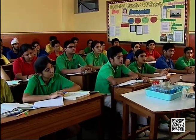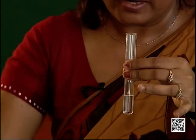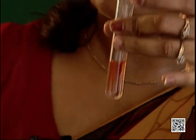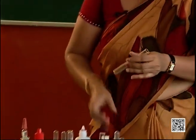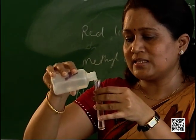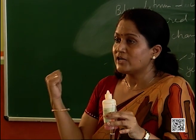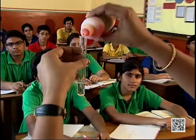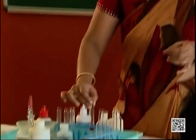We have two unknown samples and with the help of indicators we'll determine whether each is an acid or a base. Taking sample A in a test tube with blue litmus solution — can you see the color change? It has changed to red, so we ascertain it is an acid. We also test with methyl orange, which changes to red in acids — this confirms sample A is an acid.